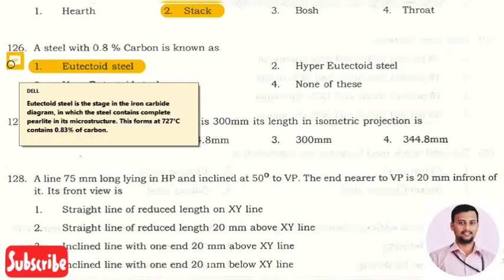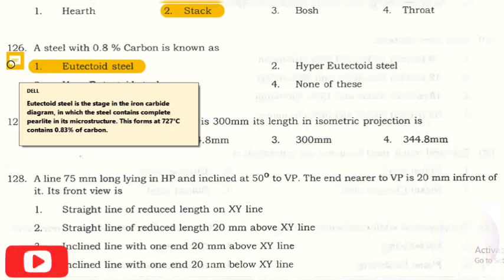What is this eutectoid steel? It is the stage in the iron carbon diagram, iron carbide diagram, in which steel contains complete pearlite in its microstructure. This is formed at a temperature of 727 degrees Celsius and contains exactly around 0.8% to 0.83% of carbon.